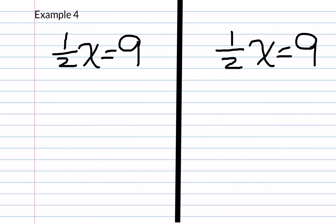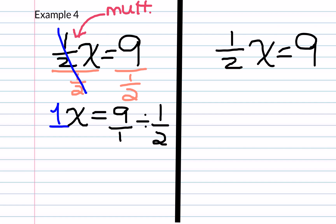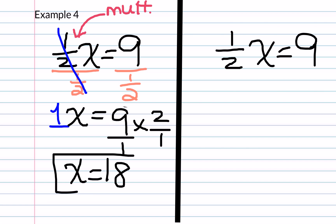Now onto our final example. In this case, notice a fraction as a coefficient — it is 1 half. The operation between any coefficient and a variable is multiplication. There are two ways to do this since we are working with fractions. The first way is to divide both sides by 1 half. We know that 1 half divided by 1 half is 1, so we keep x. Then 9 over 1 divided by 1 half is the same as 9 times 2 over 1, so x equals 18. That is our final solution.